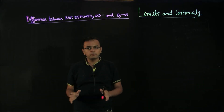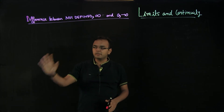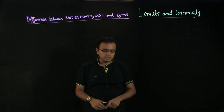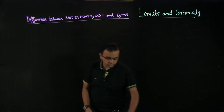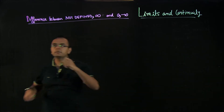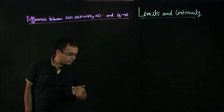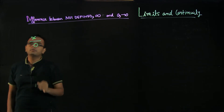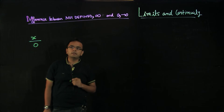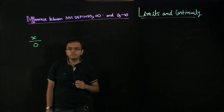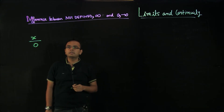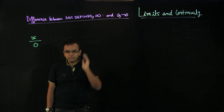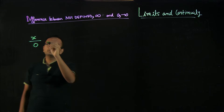I want to take just a few minutes to explain what is the difference between not defined, infinity, 0, and approaching 0. The two terms which are often confused — the definition of not defined is anything divided by 0. You should just remember: not defined means anything divided by 0 is not defined.